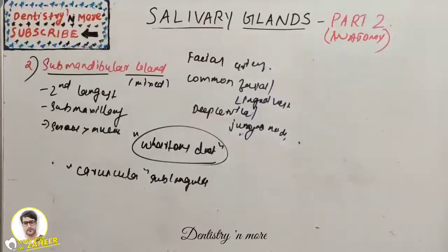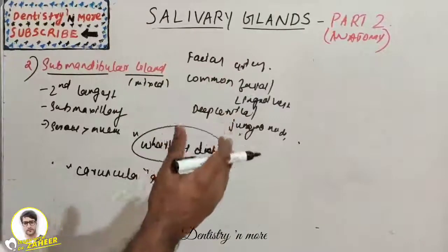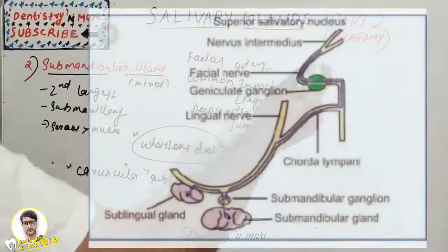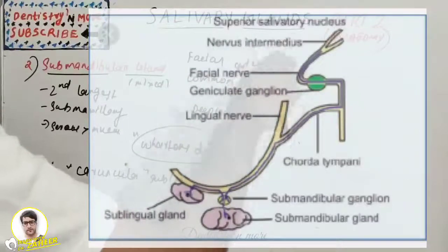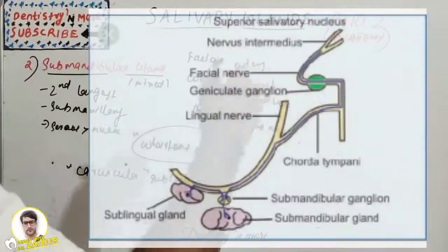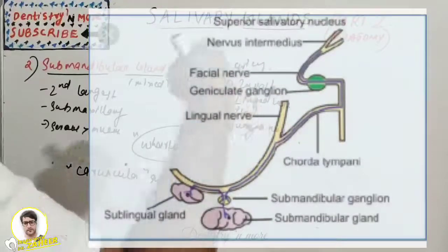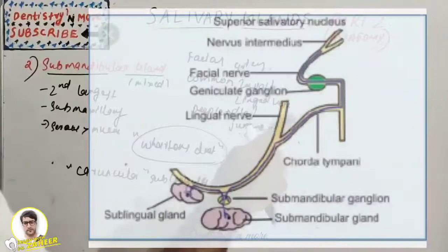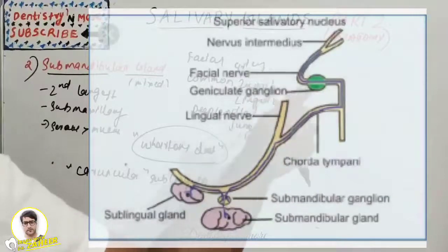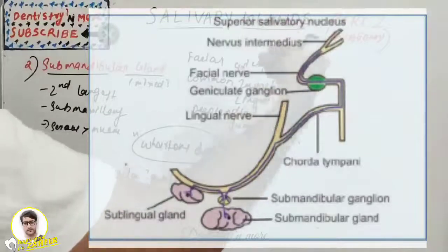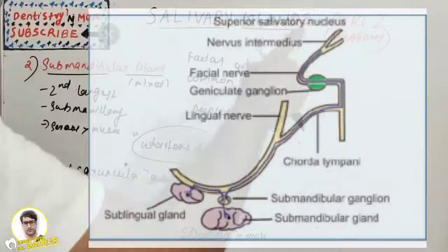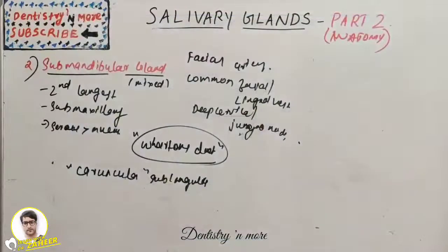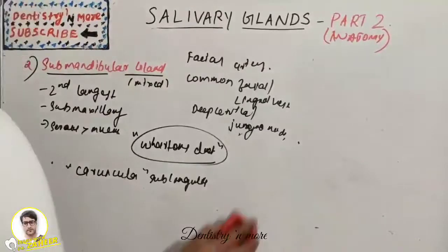The nerve supply to the submandibular gland begins near the superior salivatory nucleus. Preganglionic fibers pass through the sensory root of the facial nerve at the geniculate ganglion, then via the chorda tympani and lingual nerve to reach the submandibular ganglion. Postganglionic fibers then emerge from the submandibular ganglion and enter the submandibular gland. The two ganglia involved are the geniculate ganglion and the submandibular ganglion.